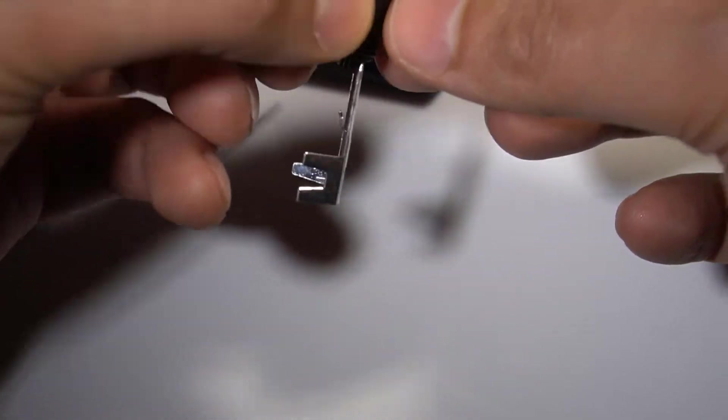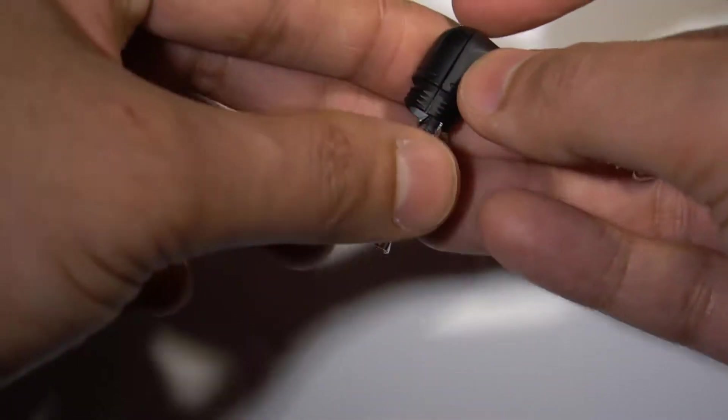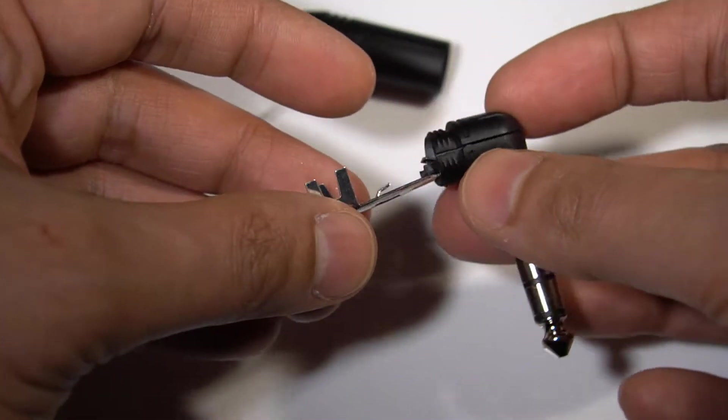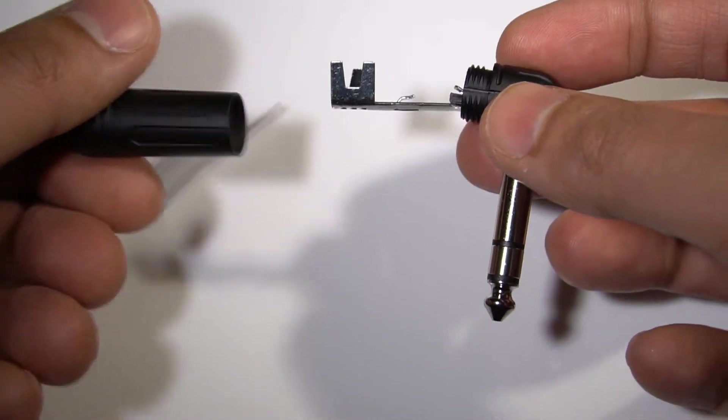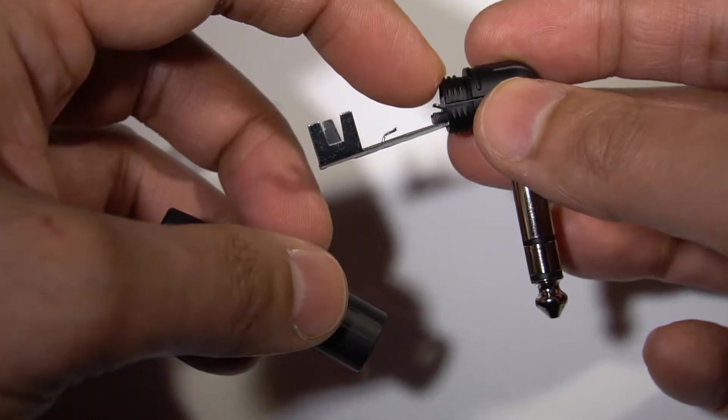And then this piece hooks onto here like that, and then this barrel can then be screwed on onto the thread here.